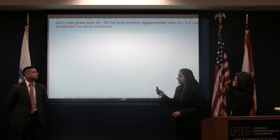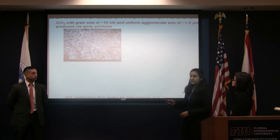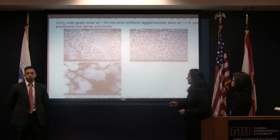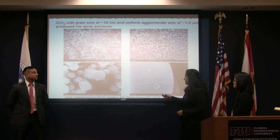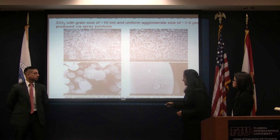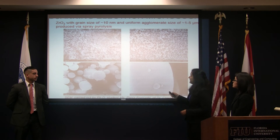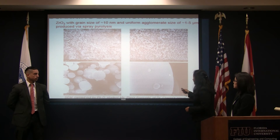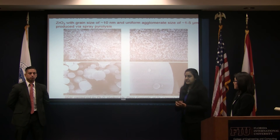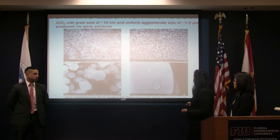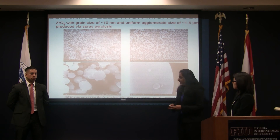These are the SEM results. You can see the images at increasing magnification. The scale of the images is shown — 10 micron, 10 micron, 1 micron, and then 100 nanometer scale. You can see the powders here. We had a uniform agglomerate size of one to five microns, and then a grain size, which you see here on the border, with a grain size average of 10 nanometers. So we were able to make nanostructured powder. The particles are nanosized in general, with one to five micron agglomerates.